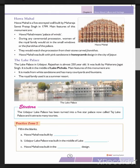The Lake Palace in Udaipur, Rajasthan, is almost 250 years old. It was built by Maharaja Jagat Singh in the middle of Lake Pichola. It is made from white sandstone and features many courtyards and fountains, used by the royal family as a summer resort. The Lake Palace has since been turned into a five-star hotel now called the Taj Lake Palace, attracting many tourists.